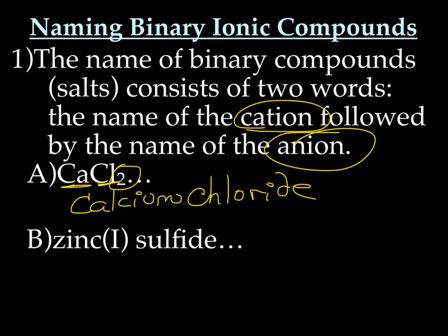Let's try the next one — zinc I sulfide. We're going to go backwards this time and write the formula. Why is there a Roman numeral there? Well, zinc is a transition metal. It'll never become like a noble gas, so we don't actually know how many electrons it lost without looking at the periodic table. So we have Roman numeral I, which tells us it's Zn1+.